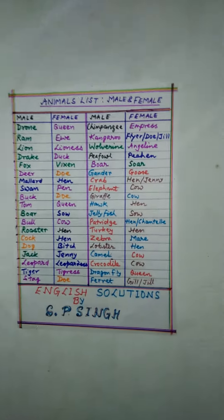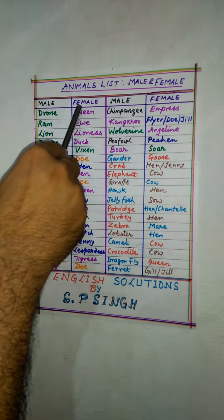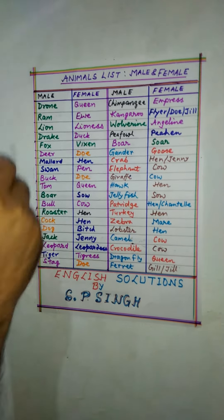Welcome viewers. Today I shall be discussing one vocabulary related topic for juniors — that is the list of female animals. By learning this list, you will learn the male and female names of the different animals.